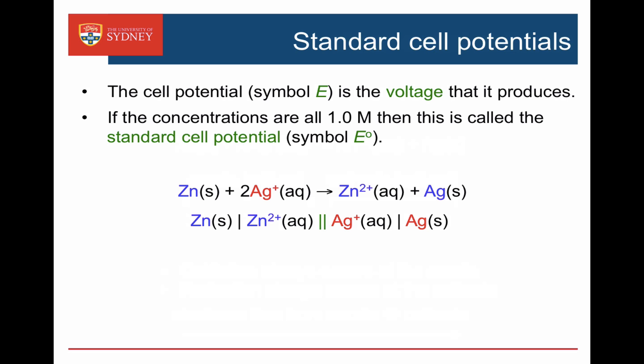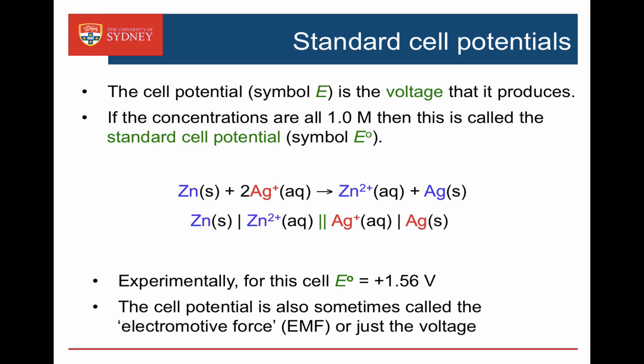If the concentrations are all 1 molar, then they're standard concentrations, and the potential I would measure is the standard cell potential, E°. For example, for this cell when I connect it up I would measure an E° — a cell potential — of plus 1.56 volts. The cell potential is also sometimes called the EMF, electromotive force, or just the voltage.